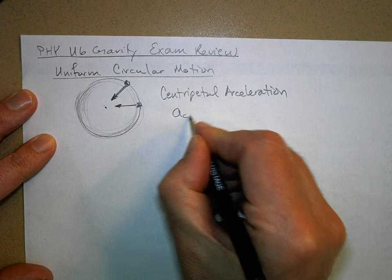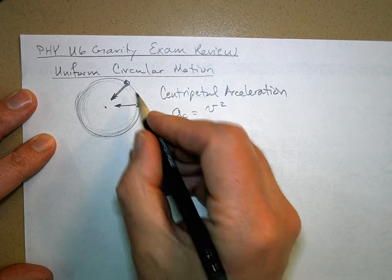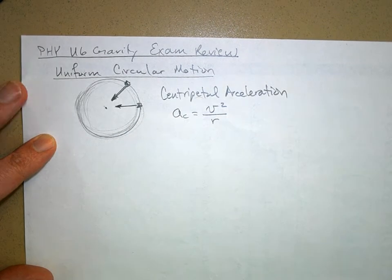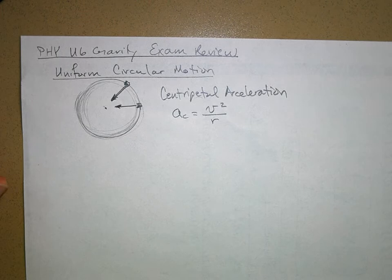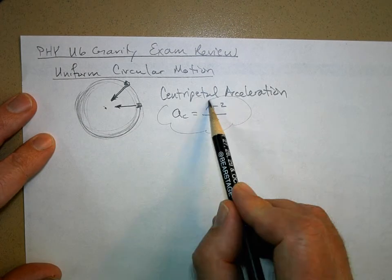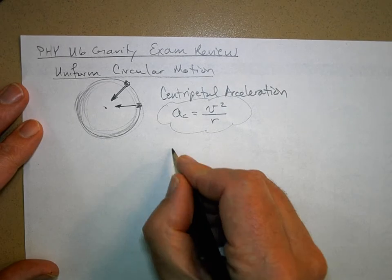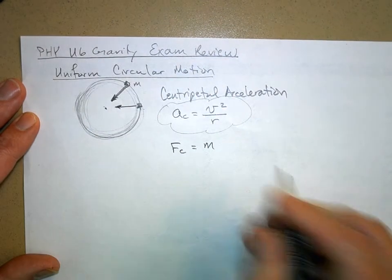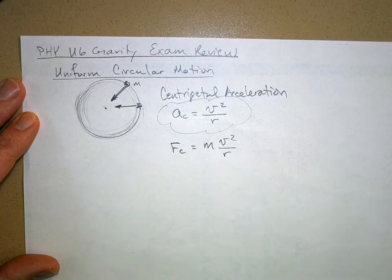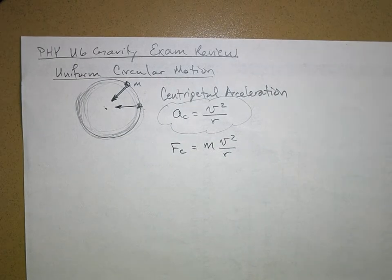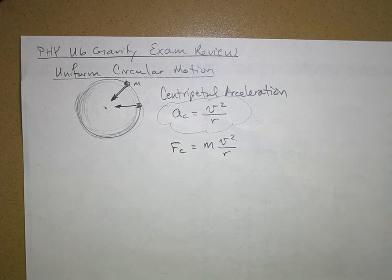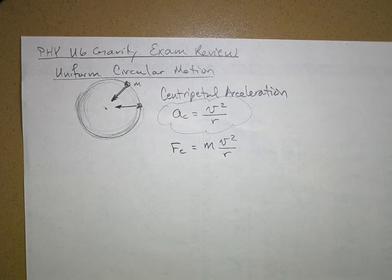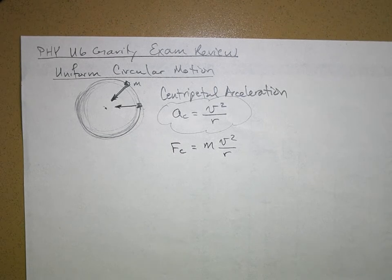Centripetal acceleration a_c equals v squared over r — this is one of our basic equations and should definitely be on your equation list. If you want the centripetal force, multiply by mass: F_c = mv²/r. This is the force you feel pushing on you when you go around a turn in your car. Remember, centripetal acceleration doesn't change your speed — it changes the direction of your velocity vector.